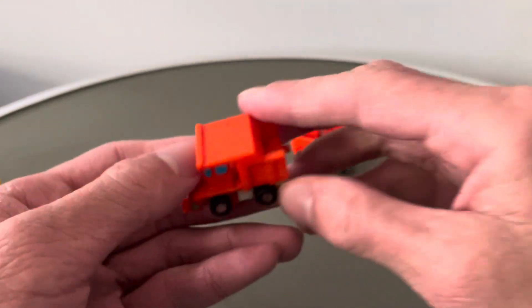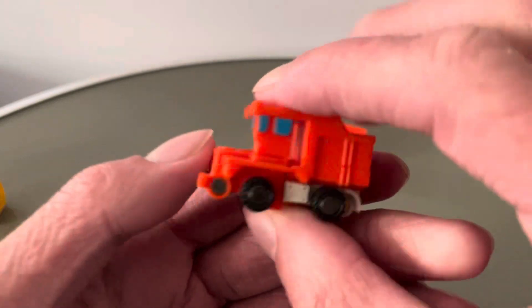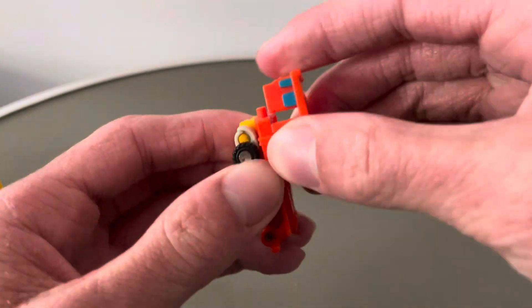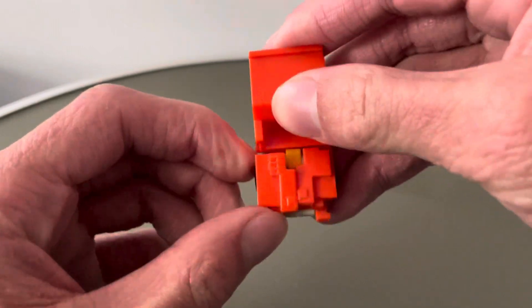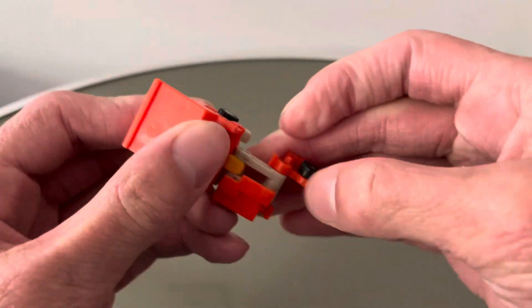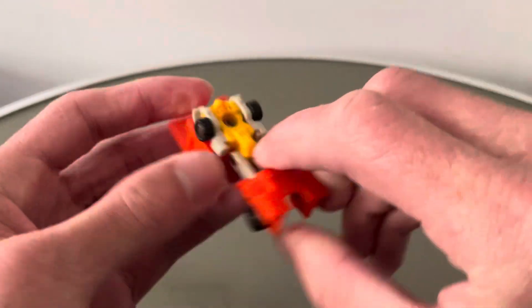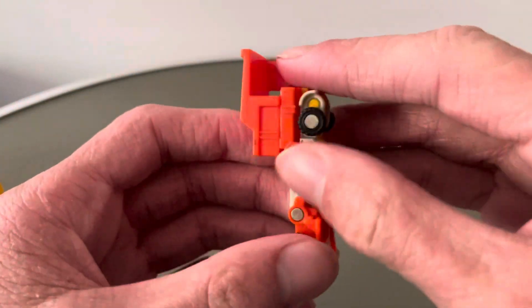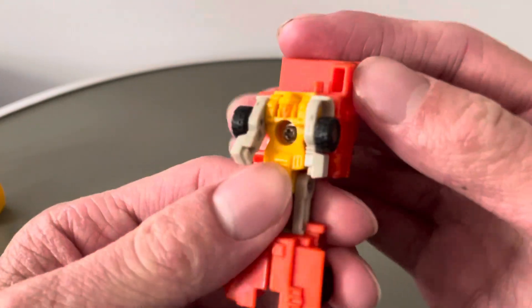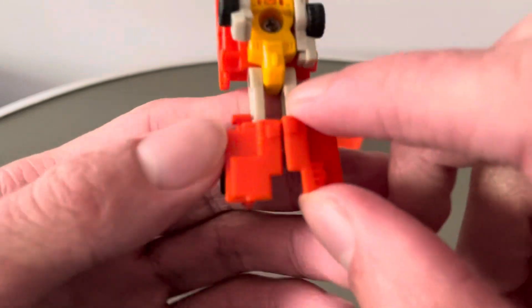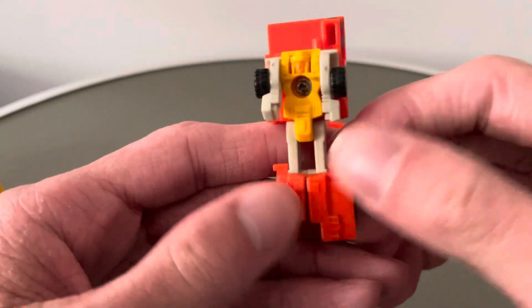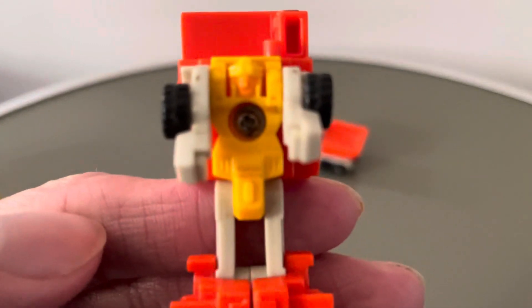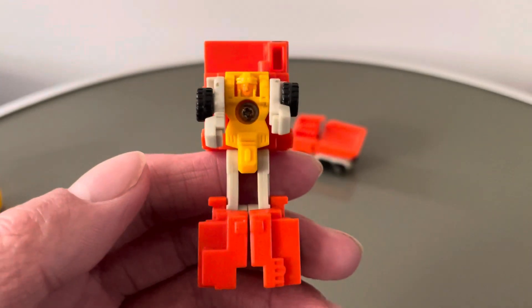This guy is probably my favourite of the whole set, so I'll come to him last. He's the back. So the front, to transform, what we do is we revolve this section around like this, and then we get the legs. The front becomes the legs and it just folds out like so. It's a bit loose on this one. On this one the legs aren't too bad. That is Sledge in robot mode.